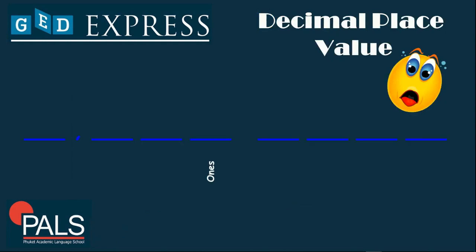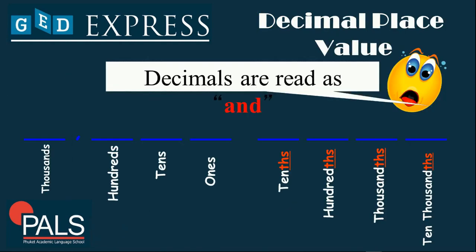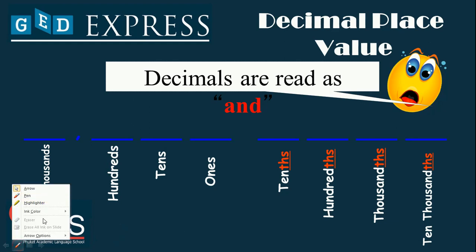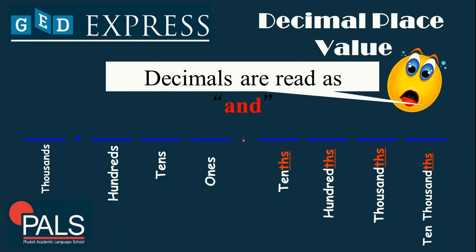Let's have a review of the decimal place value. On the last discussion, I taught you the position of whole numbers and their place value — ones, tens, hundreds, and thousands. We have a dot to indicate a decimal, and the place value of the number after the dot is the tenths place, then hundredths, thousandths, and ten-thousandths.